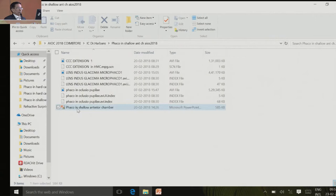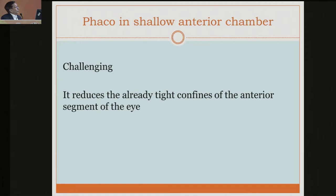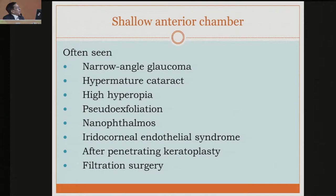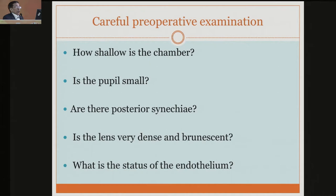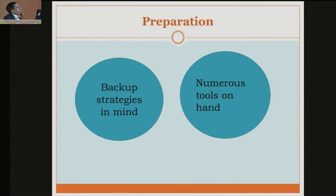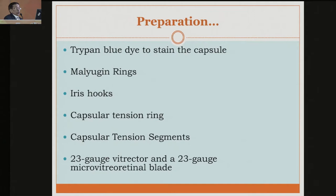Now the shallow chamber. The difficulty is that it reduces the already tight confines of the anterior segment of the eye, because your endothelial cells are very near to your phaco probe. You get narrow angle glaucoma and hypermature cataract presenting this way. Difficulty in clear corneal entry - many times you enter and injure the pupil iris, and chances of the pupil getting small are much more. Capsulorexis is difficult, viscoelastic is coming up high, chances of endothelial damage are more, and iris prolapse is more. You have to assess the exact case: is the lens very dense? What is the state of endothelium? Have a strategy in mind because you may encounter drop of the nucleus. Prepare with trypan blue, Malyugin ring, iris hooks, as chances of the pupil going small are much more with a shallow chamber.